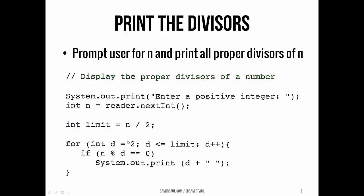We start our counter variable at 2 — d equals 2 — and we're checking every number between 2 and the limit, which is n over 2. Every time we enter the for loop, you can see we have another if statement — another control statement embedded in here. This if statement is nested inside the for loop. If n mod d equals 0, in other words if n divided by d has no remainder, which is our definition of whether d is a proper divisor of n, then we print out that number and a space. That gives us all the proper divisors of n, printed out one by one.